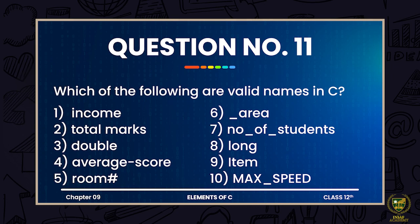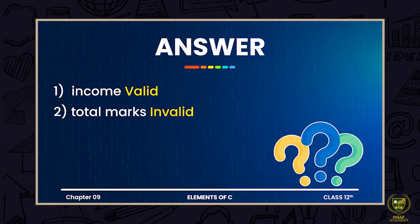The next question is question 11, which is about naming conventions. Recall the topic of naming conventions — what rules apply when you are giving a name to any variable. You have to recall all those rules and according to those rules, tell which of the given variable names are valid or not. If you look at the screen, the first one is 'income' — income is a valid variable name.